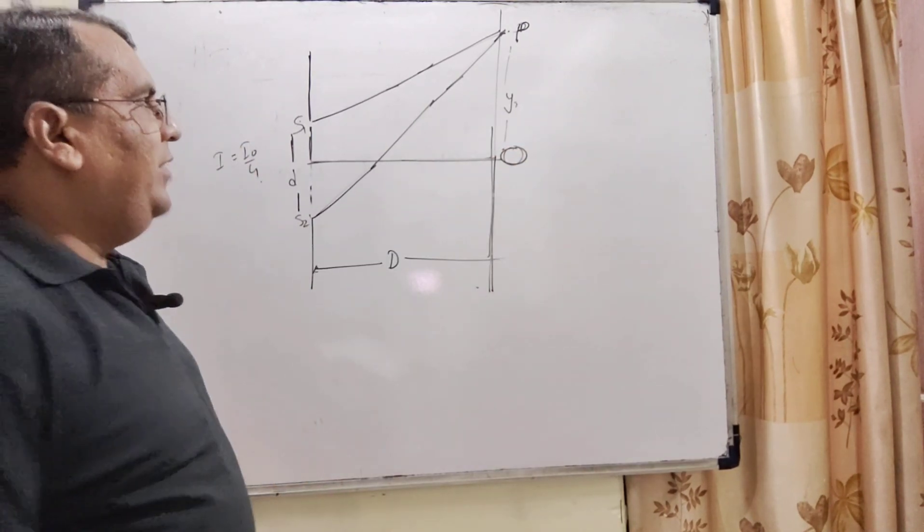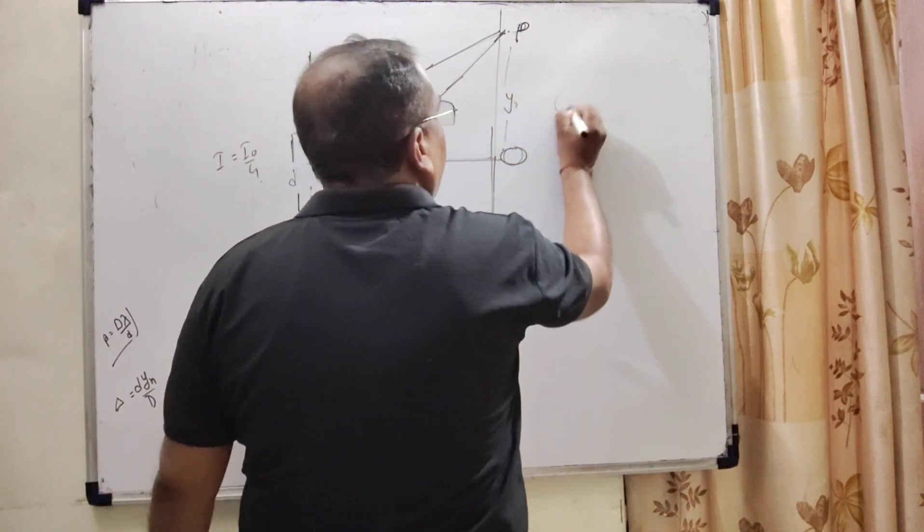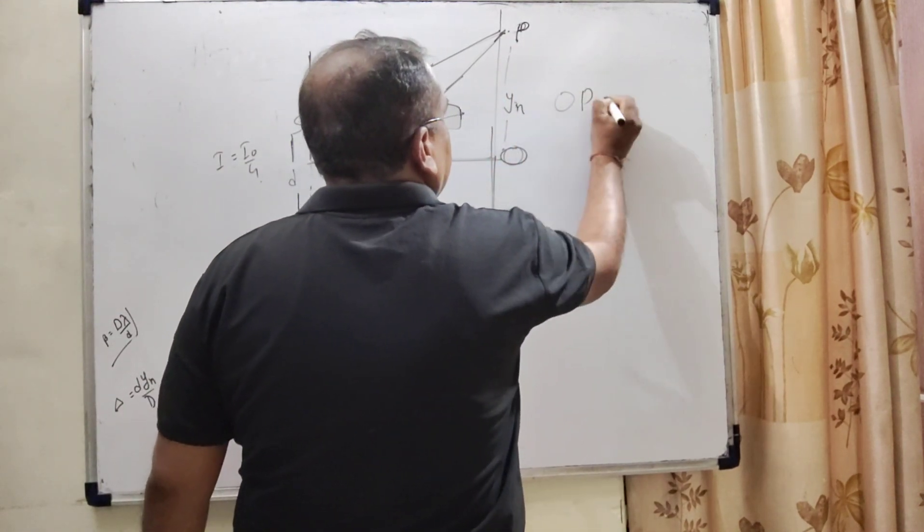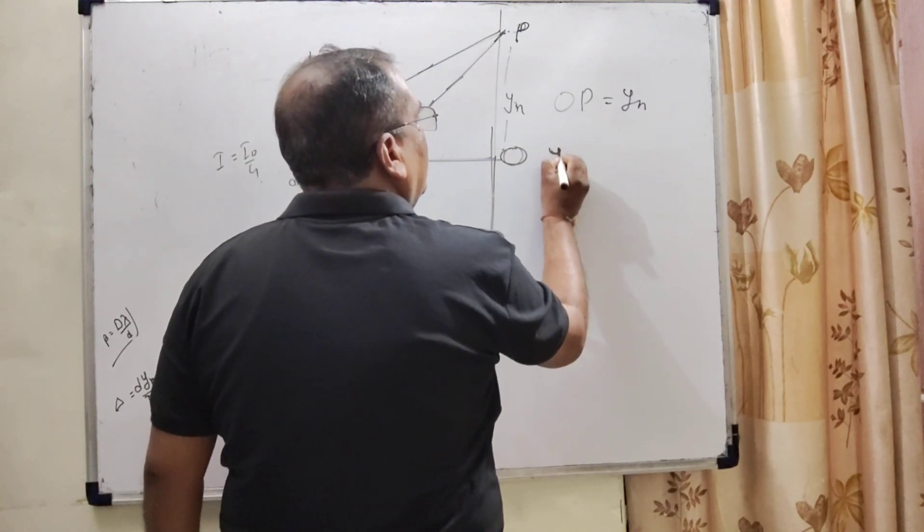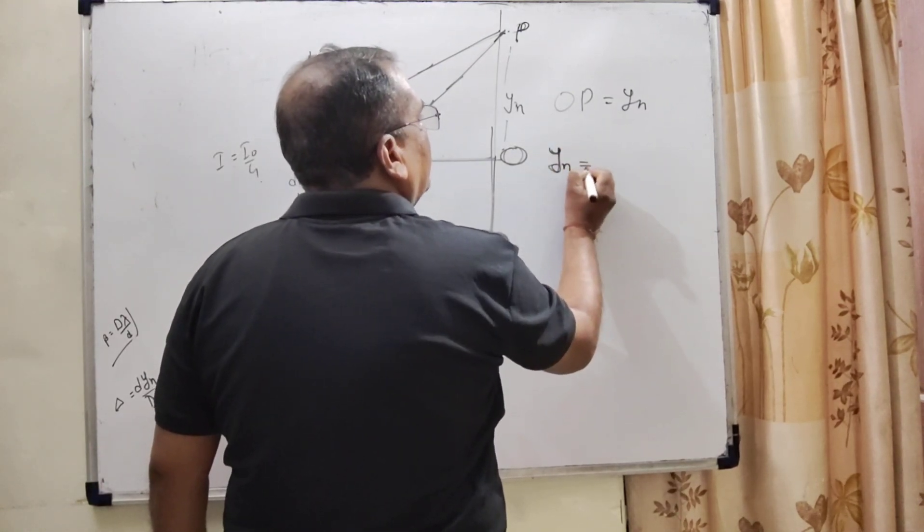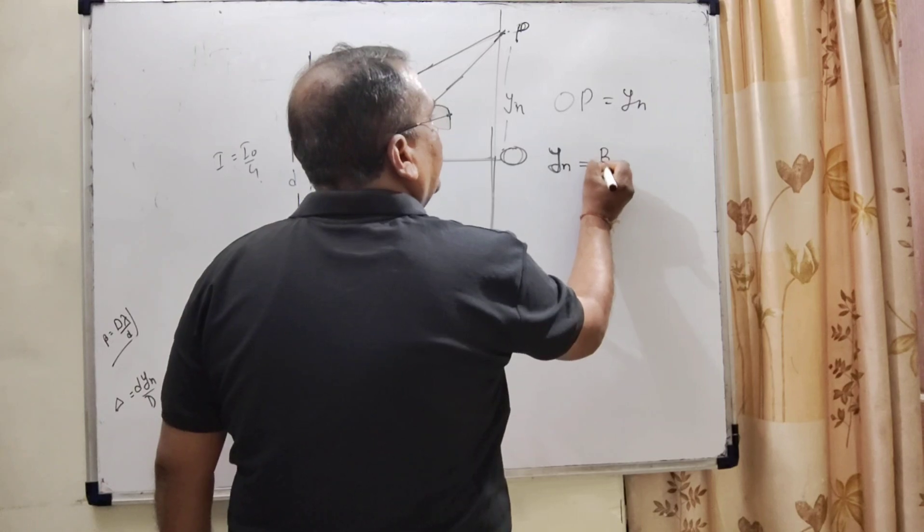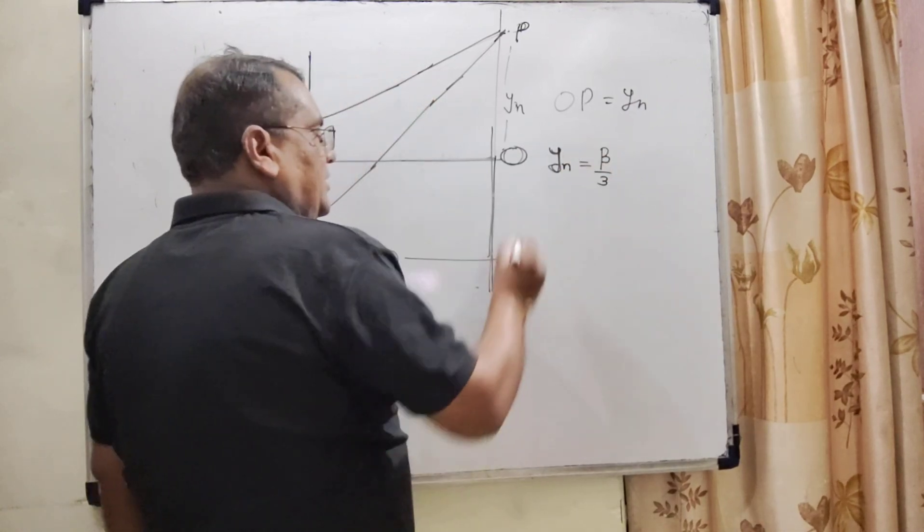Now, first of all, we are given the distance OP, that is yn, and it is given in the question this yn is equal to one third of fringe width. It is given in the question.